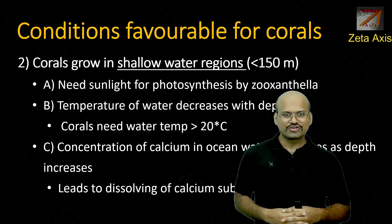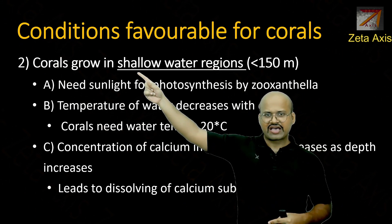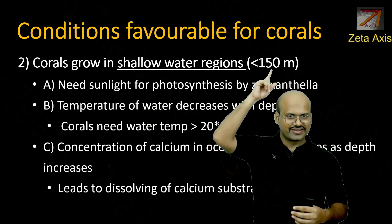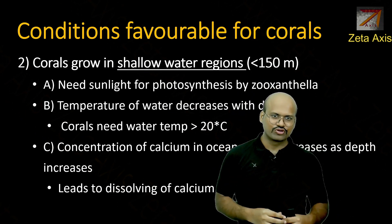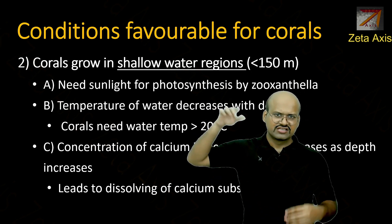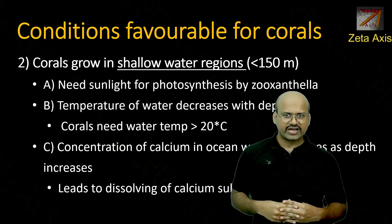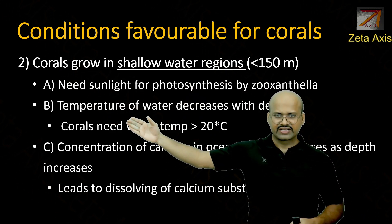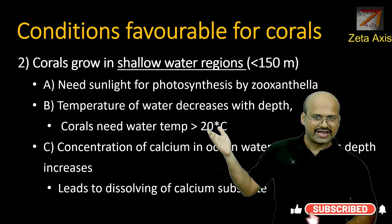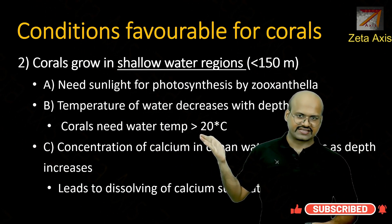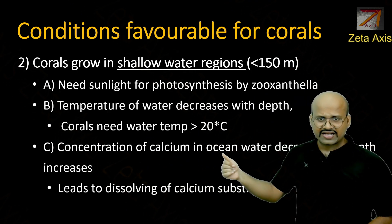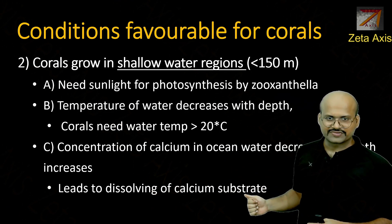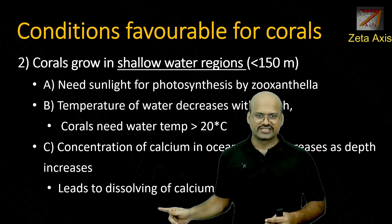Another important condition is that corals grow in shallow water regions less than 150 meters deep — though different sources cite depths of 100 to 200 meters. There are several reasons for this: they need sunlight for photosynthesis by zooxanthellae, temperature decreases with depth, and the concentration of calcium in ocean water decreases with depth, which leads to dissolving of the calcium carbonate substrate of the corals.